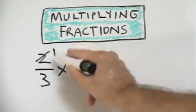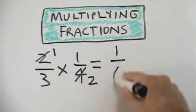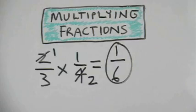When we multiply across, we find that one times one equals one. Three times two equals six. And we have our original answer of one-sixth.